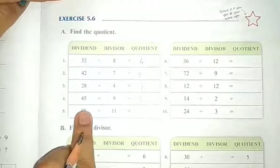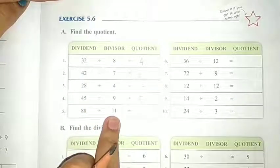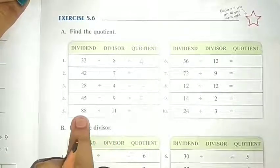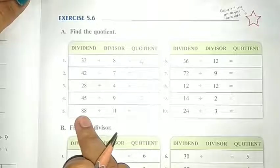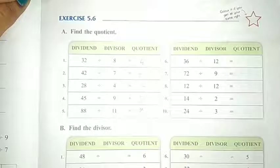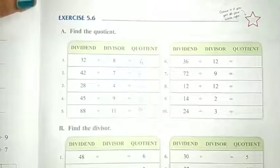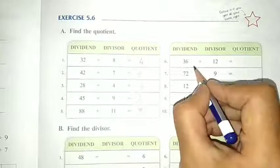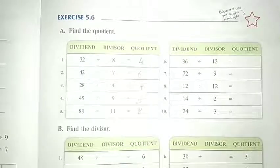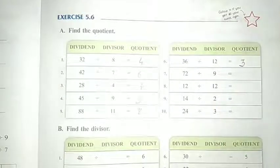Then 88 divided by 11. 11 के table में 88 का पता है? 11 8s are 88. Then here is 36 divided by 12. 12 1s are 12, 12 2s are 24, 12 3s are 36. So our answer is 3.